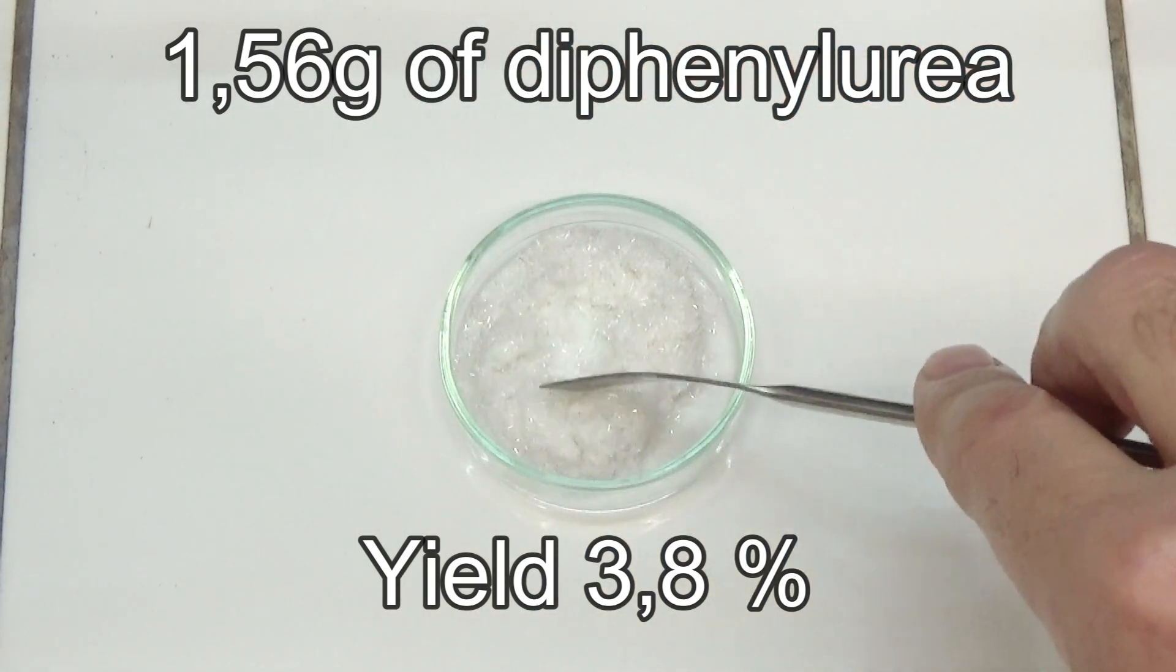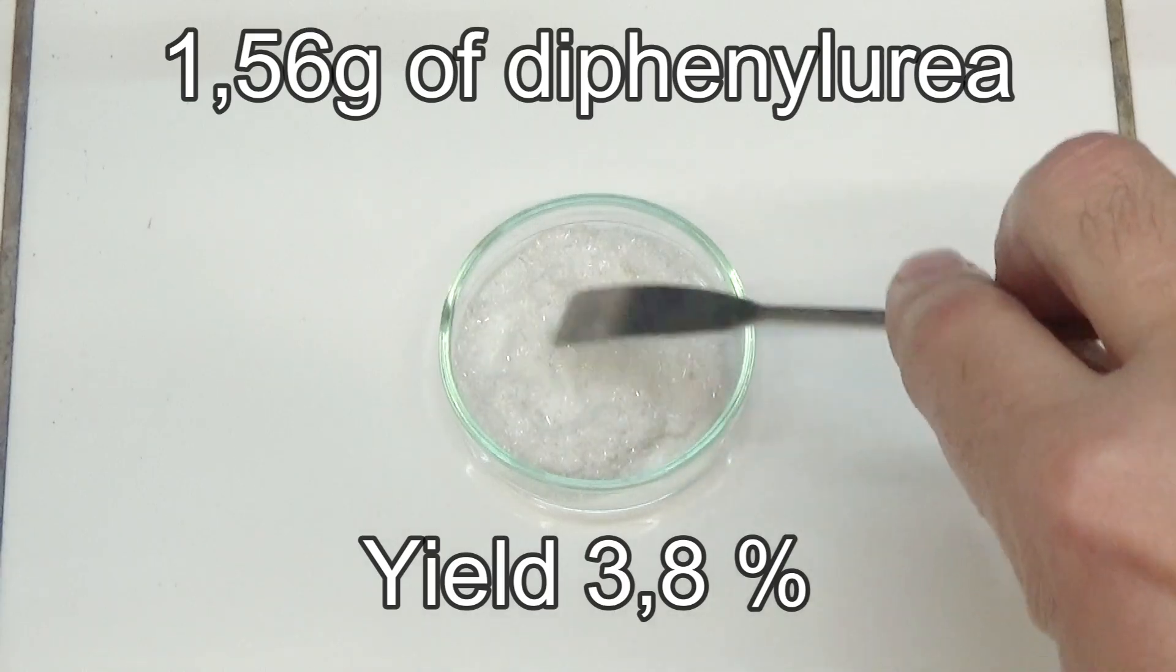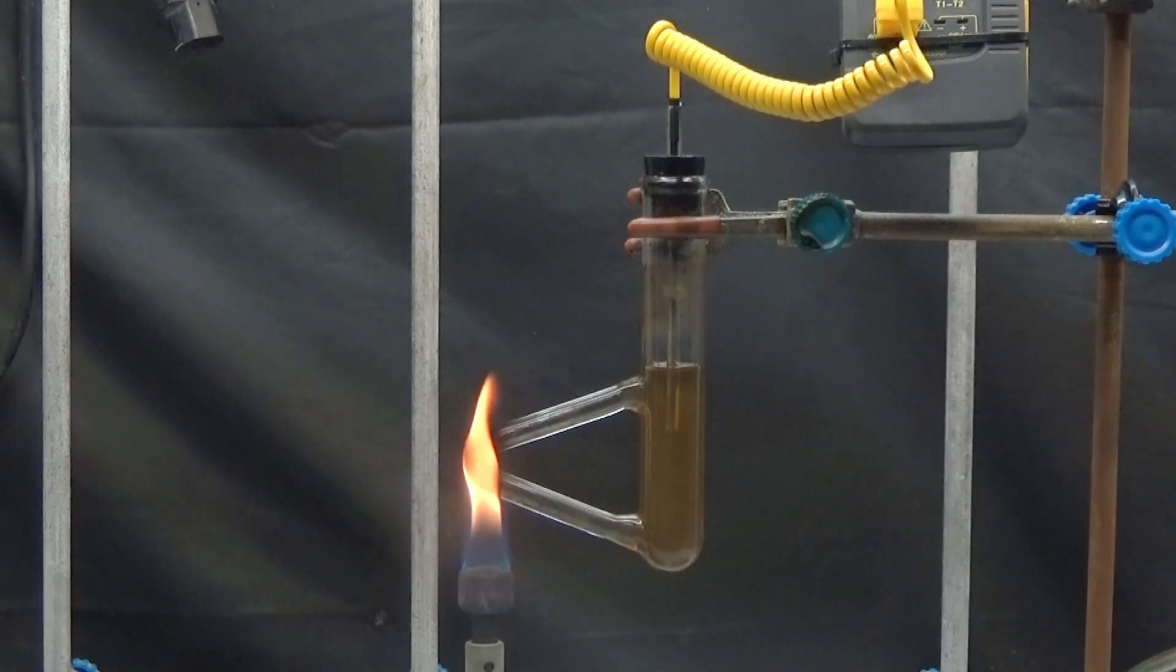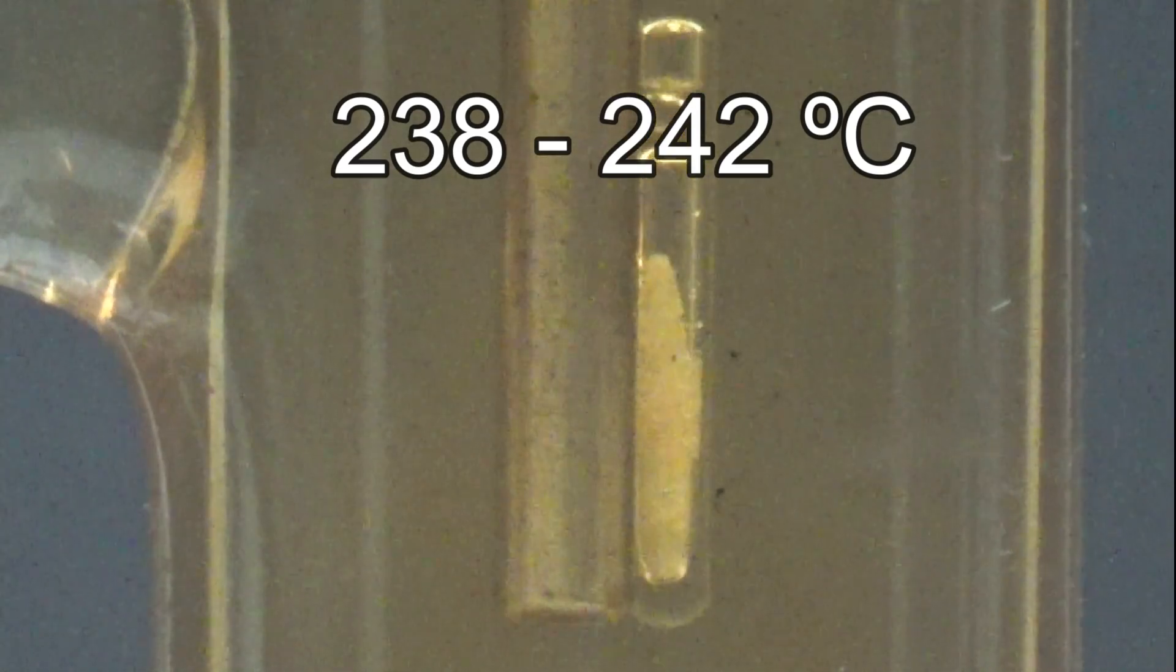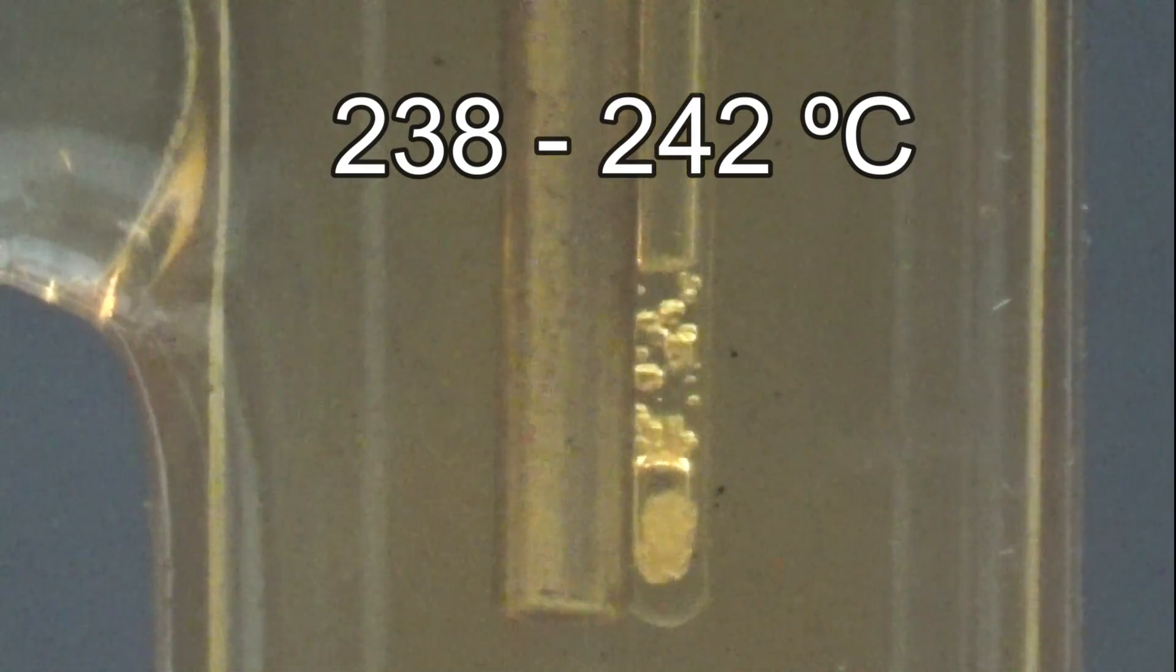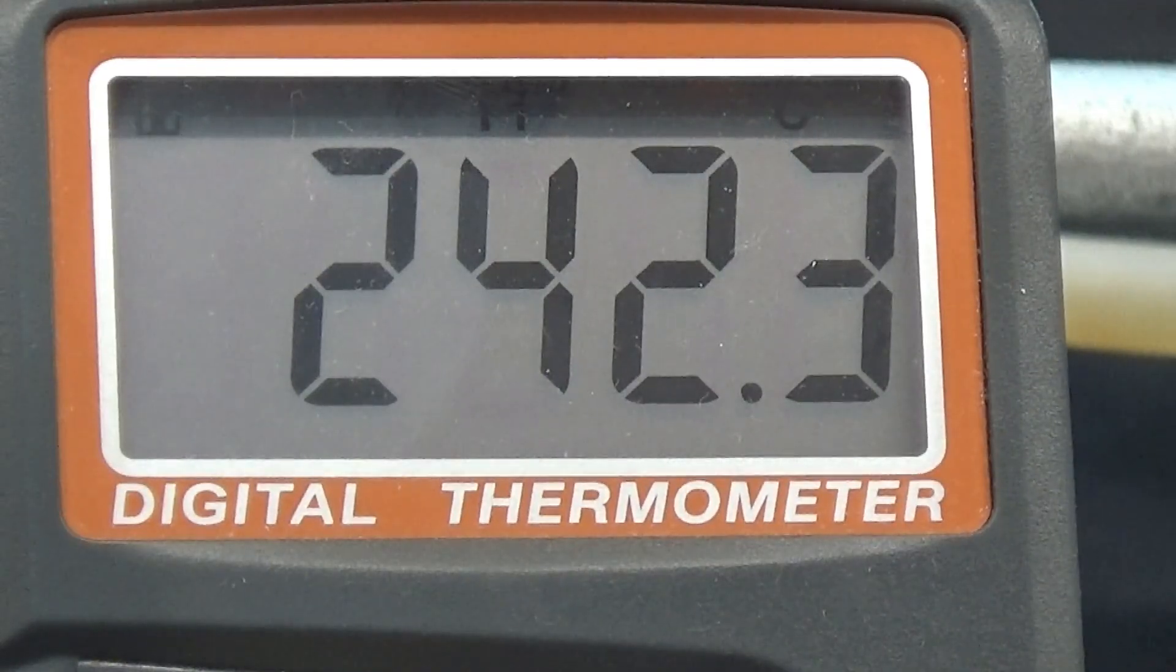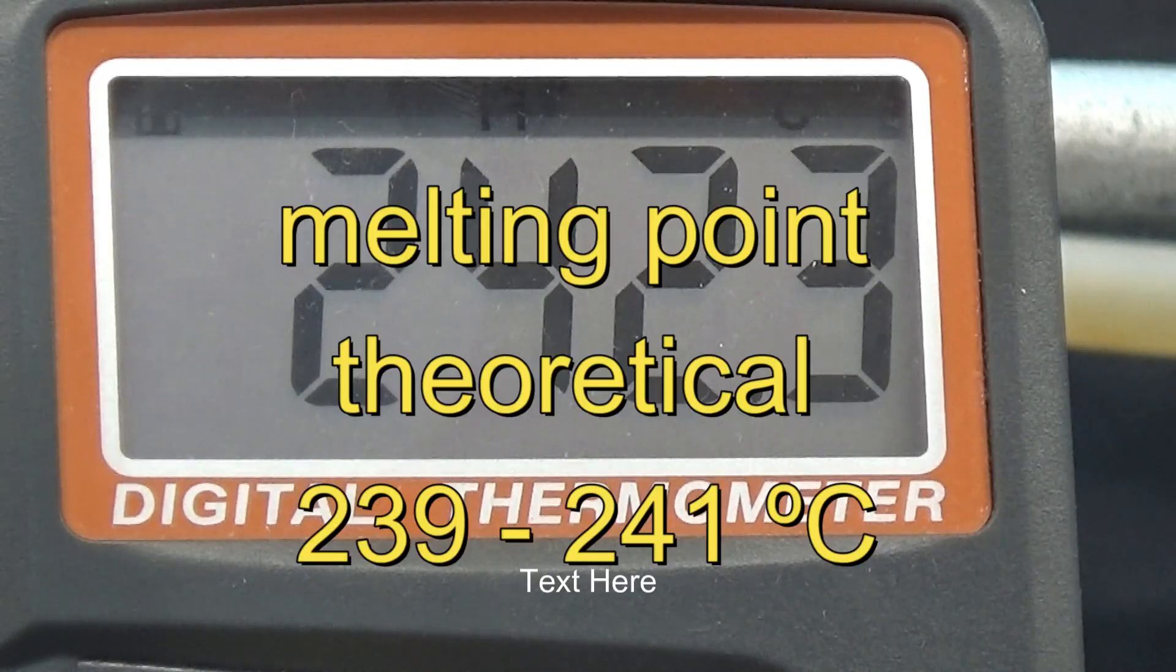The yield was 3.8% depending on the aniline used. First, we determine purity using the melting point. The temperature measured between 238 and 242 degrees. The melting point of diphenylurea is between 239 and 241 degrees.